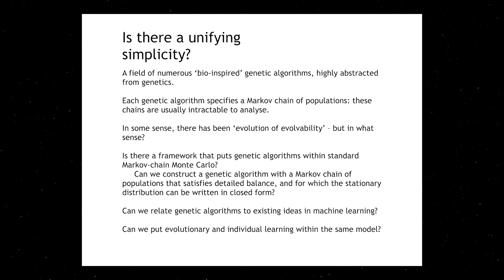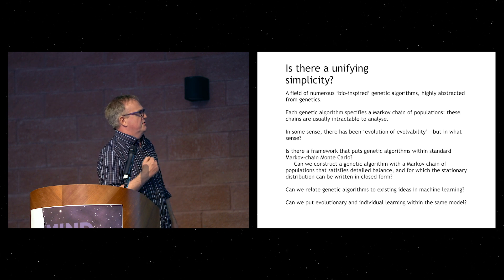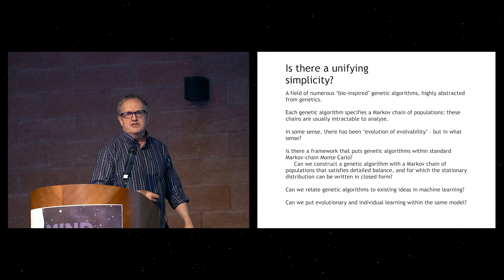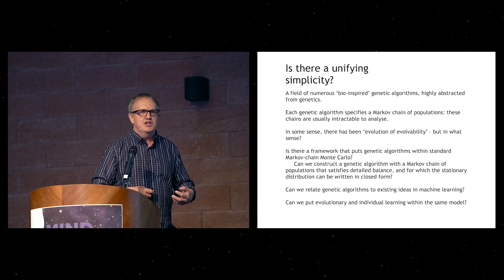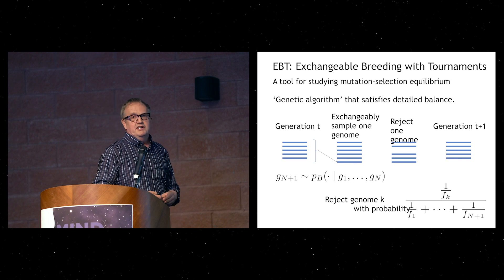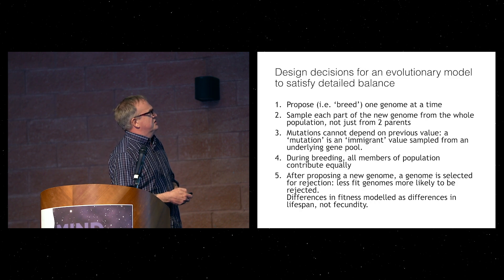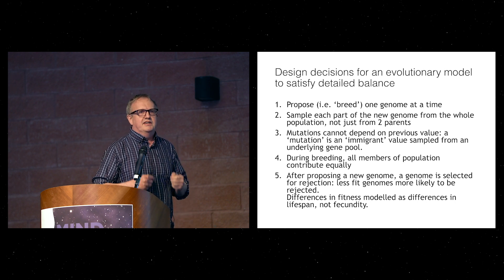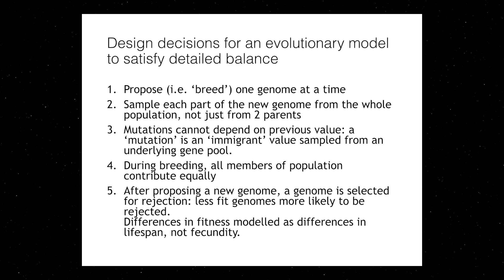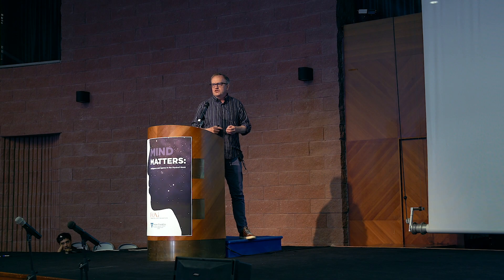Is there a unifying simplicity? How do we even think about evolution of evolvability? Is there a connection to machine learning? Can we relate genetic algorithms — which are a largely separate field with their own beliefs about the algorithms they develop — to machine learning? The idea is yes. How can I design a genetic algorithm which gives me a Markov chain of populations satisfying detailed balance, where I can write down the stationary distribution, apply all the techniques of Monte Carlo, and relate it to machine learning and Bayesian inference?